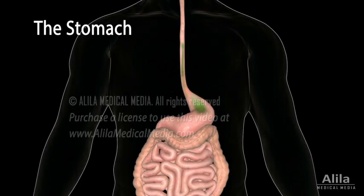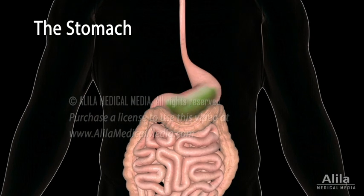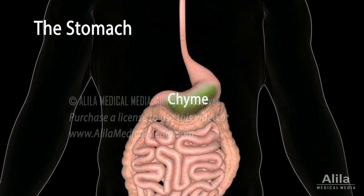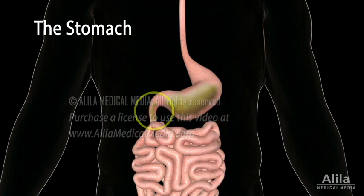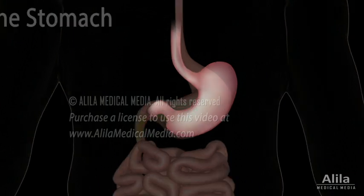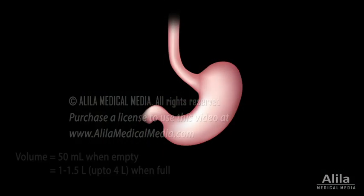The stomach receives boluses of food from the esophagus and turns them into chyme, a semi-liquid mass of partially digested food. It mechanically breaks up food and partially digests protein but absorbs very little. Rather, it serves as a temporary storage, releasing only a small amount of chyme into the intestine at a time to ensure that the intestine has enough time to fully digest and absorb the nutrients.